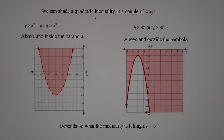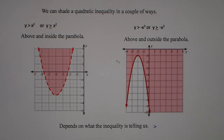We can shade a quadratic inequality in a couple different ways. We can shade above and inside the U, or we can shade above the U but outside the U — that's the parabola.